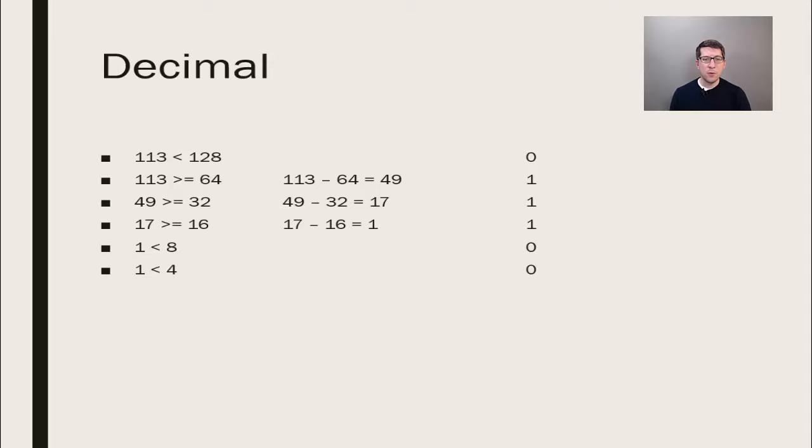From here we place zeros for 8, 4, and 2, and then finish with a 1. The final binary number is 1110001.